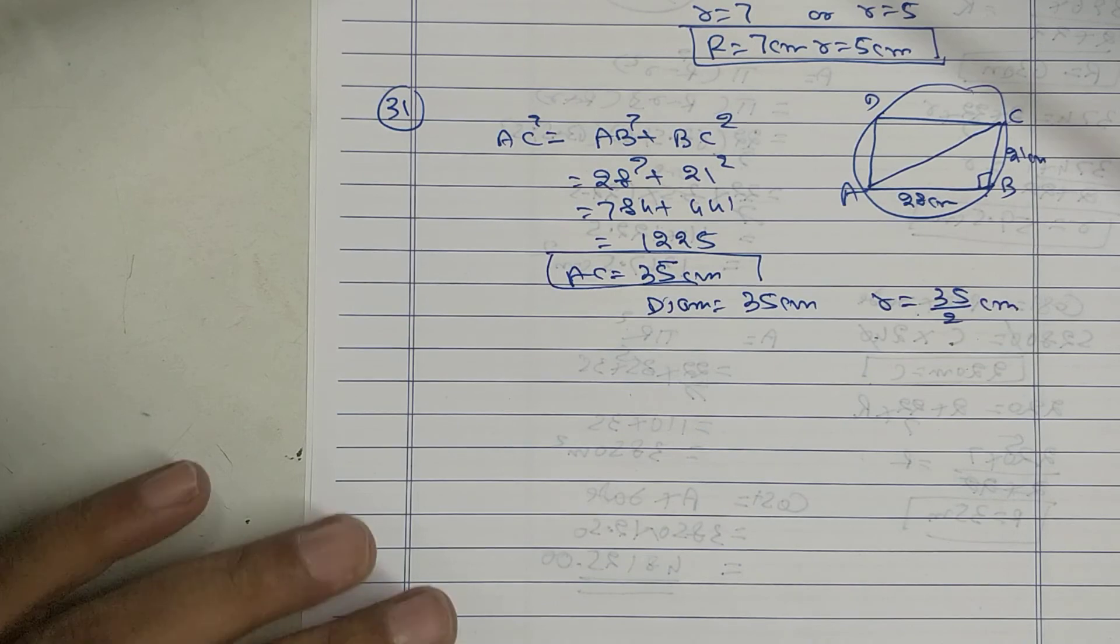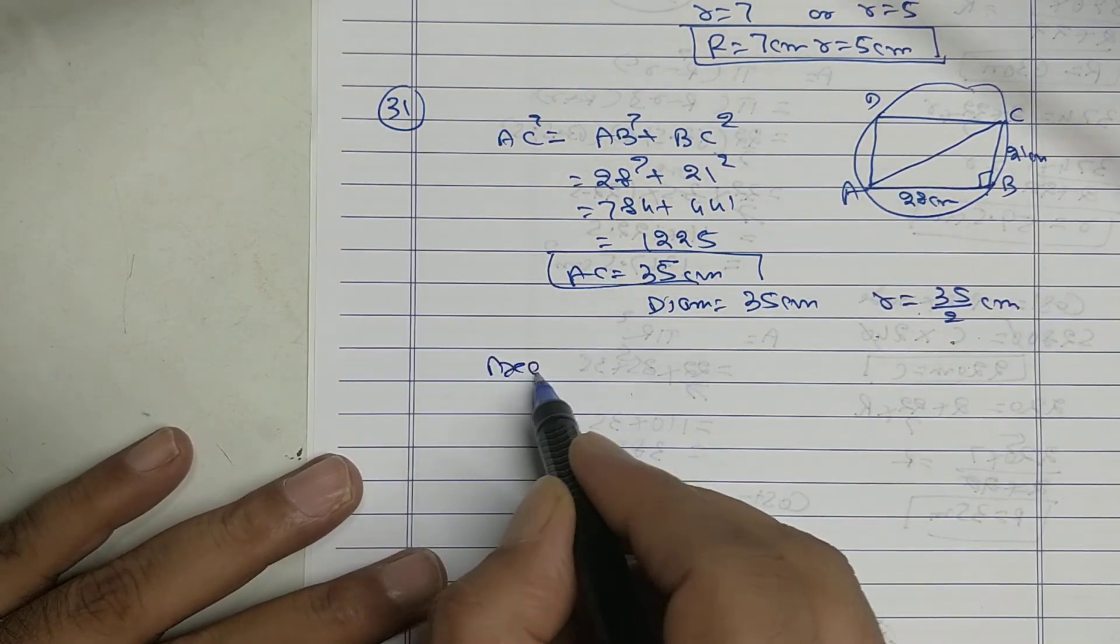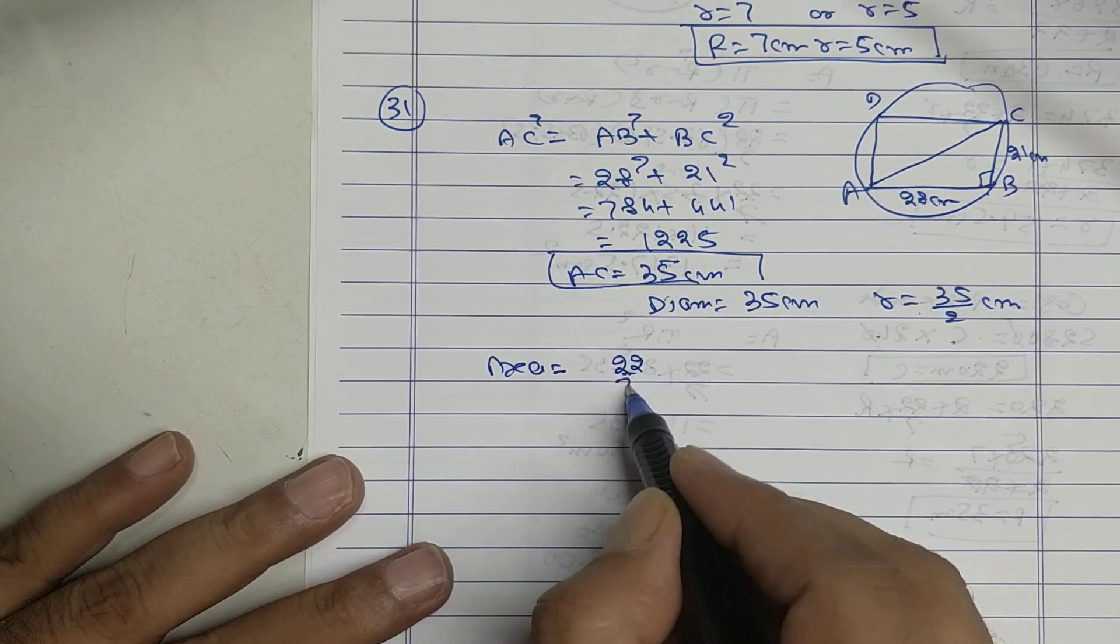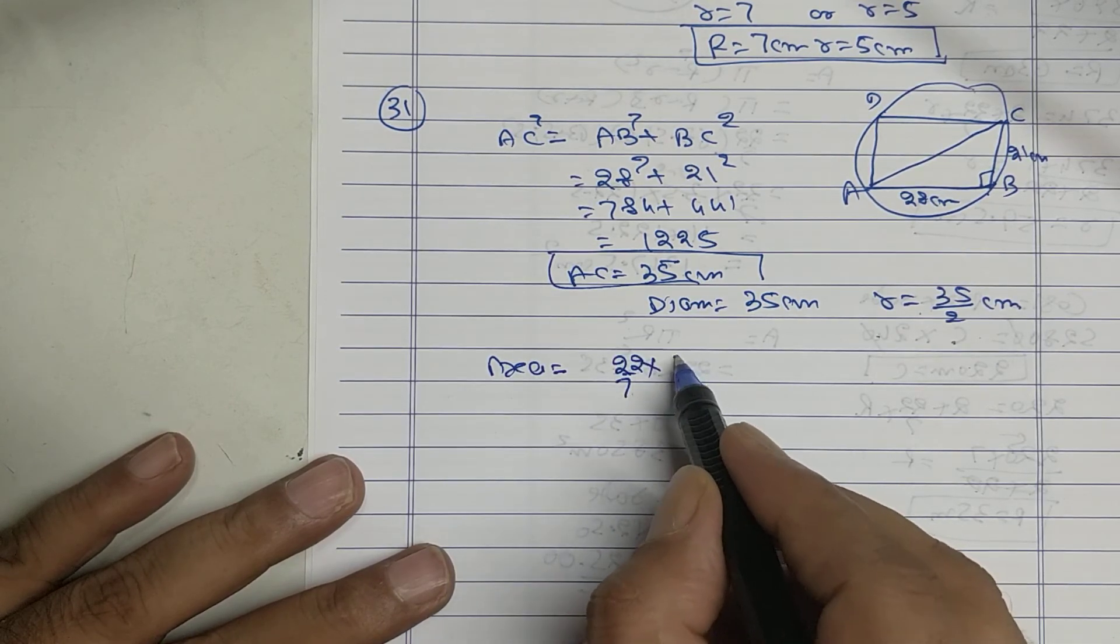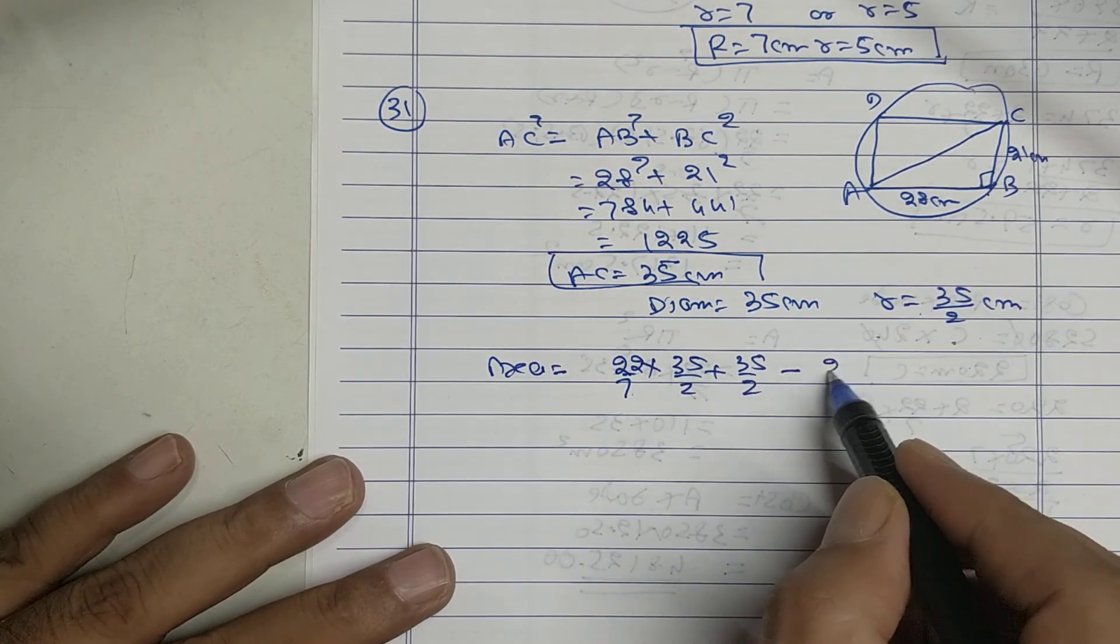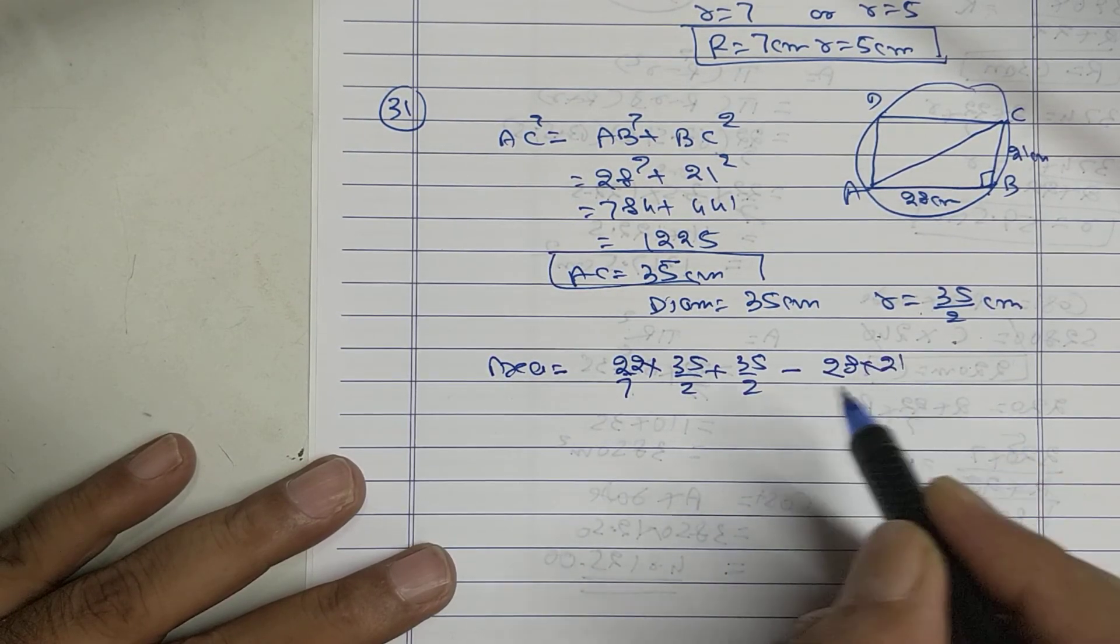Find the area of shaded region: area of circle minus length into breadth. Pi, 35 upon 2 into 35 upon 2 minus length into breadth.